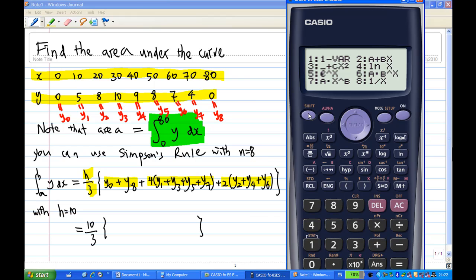Let me do a setup here. Shift, setup. And I'm going to do the statistic, go down to 2 statistic. And then I'm going to click on the frequency 1 for frequency on. And now I'm going to go to statistic mode, mode 2 for statistic. And I'm going to make a table using 1 variable.